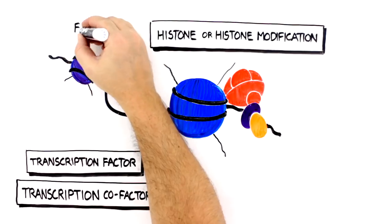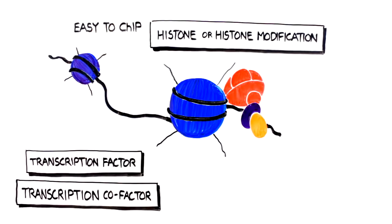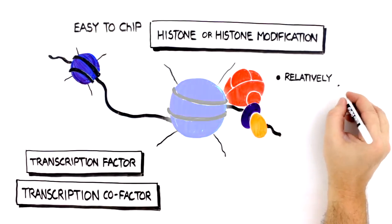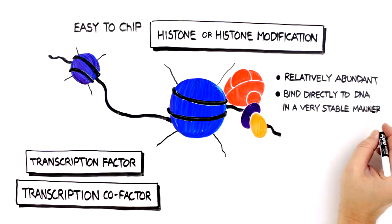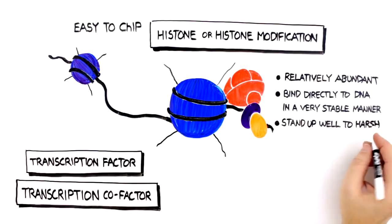Histones and histone modifications are easy to ChIP because they are relatively abundant and bind directly to DNA in a very stable manner, so they stand up well to harsh fragmentation conditions.